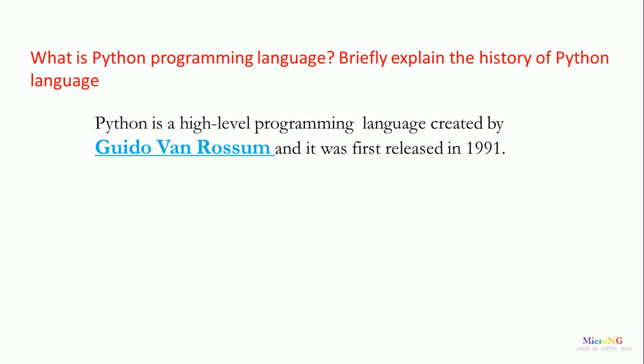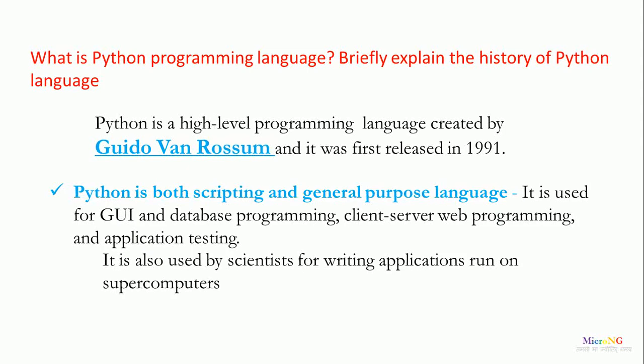Hello, this tutorial is to know about Python programming language and the history of the language. Python is a high-level programming language created by Guido Van Rossum and it was first released in 1991. Python is both a scripting and general purpose language.